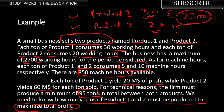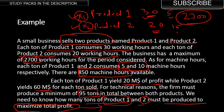We need to know how many tons of product one and product two must be produced to maximize total profit. The question is: how many of each product to produce given the constraints? The decision variables for us are the number of tons of product one and product two — let's call them x1 and x2.